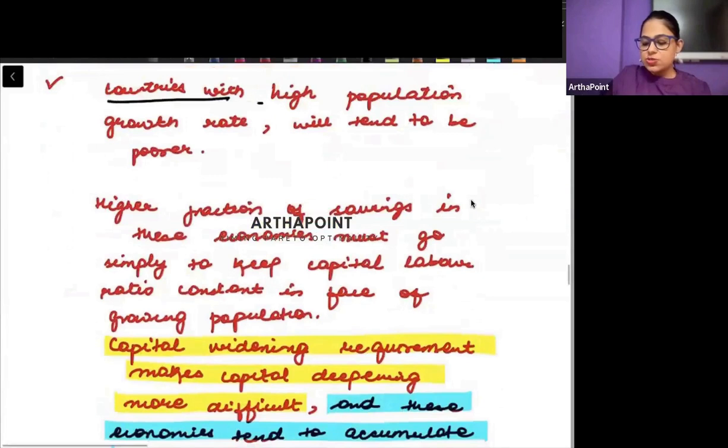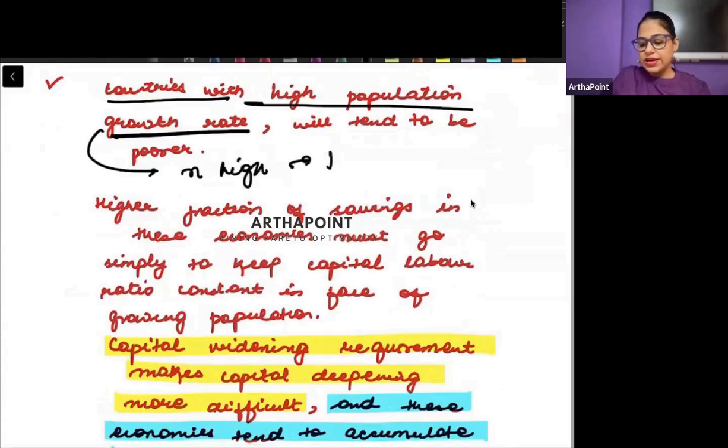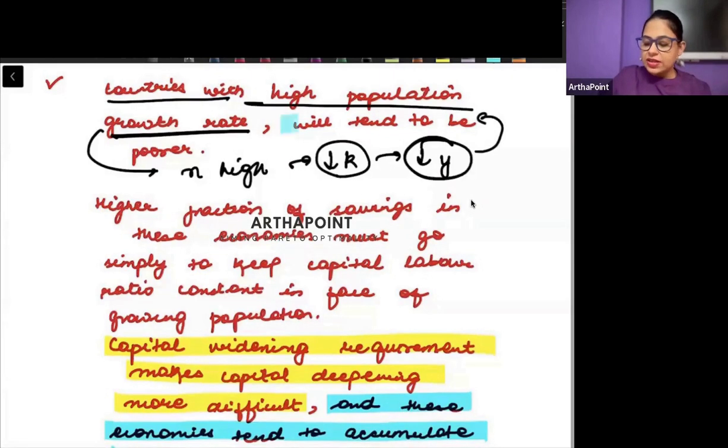Similarly, those countries with high population growth rate, which is N high, we have seen it will decrease capital per worker. This will decrease the output level, and the country will become poorer.